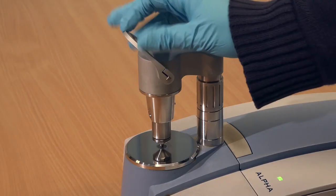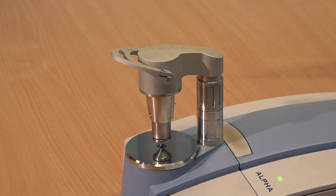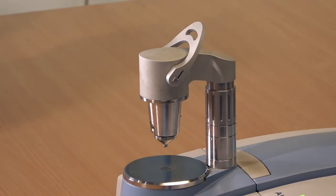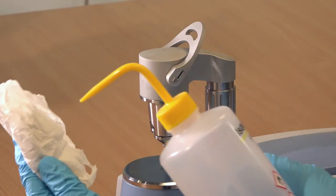Swivel the arm out of the way and clean the diamond surface with IPA on a tissue. IPA is ideal as it evaporates quickly.